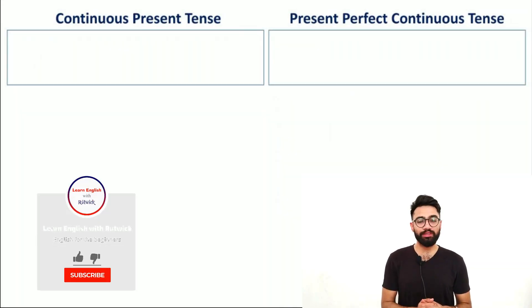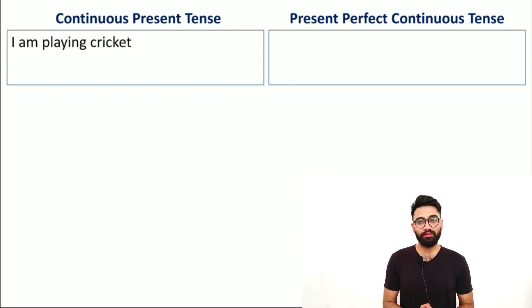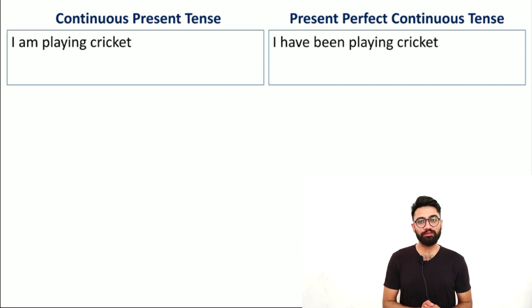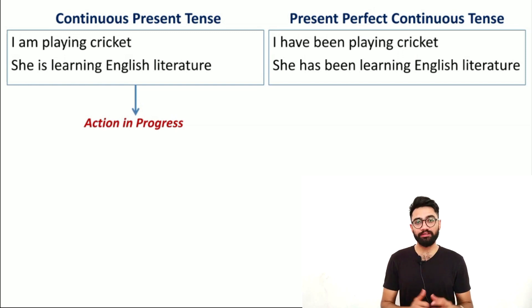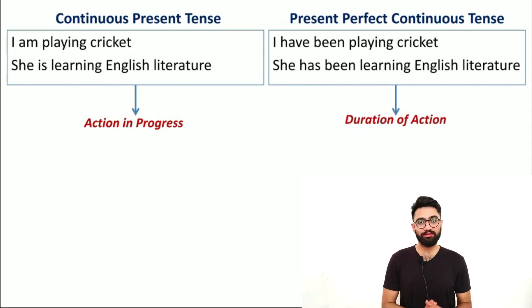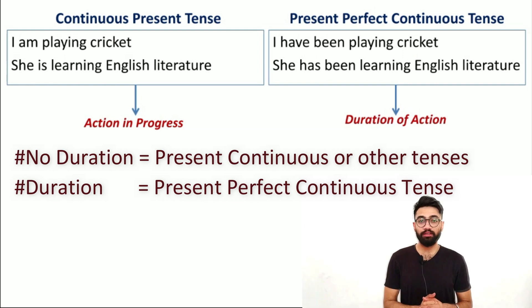This tense looks very similar to present continuous tense, and that is where most people get confused. For example, present continuous tense: 'I am playing cricket.' Present perfect continuous tense: 'I have been playing cricket.' Similarly, 'She is learning English literature' versus 'She has been learning English literature.' Present continuous tense is used to talk about actions in progress, while present perfect continuous tense is used to talk about the duration of those activities. The only difference between the two is duration.